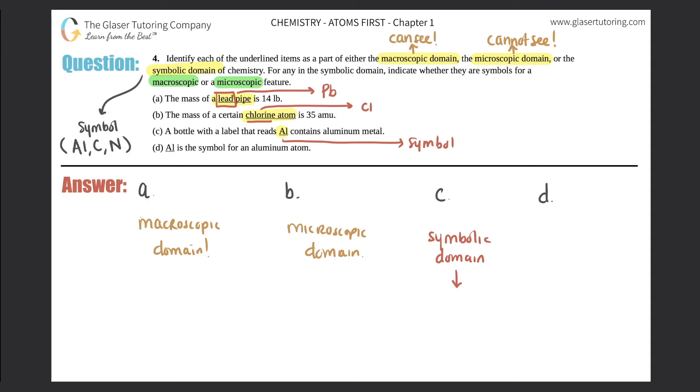They're saying that the bottle that's reading Al contains aluminum metal. The actual bottle contains aluminum metal. Can we see the bottle? Yes, we can. So this would be a macroscopic feature.